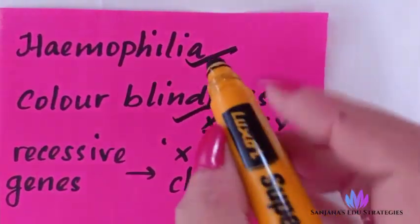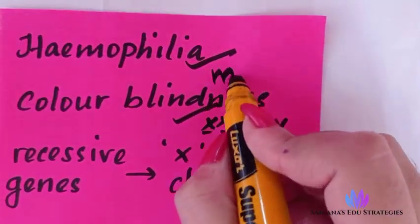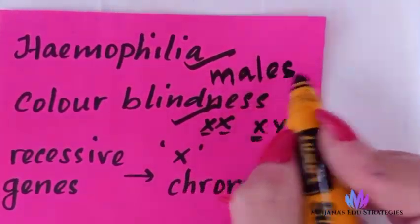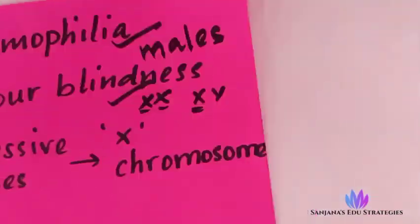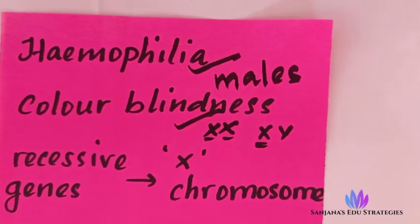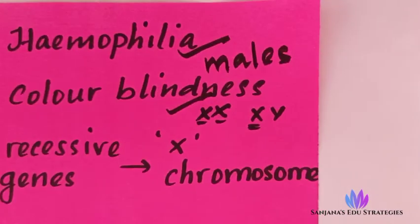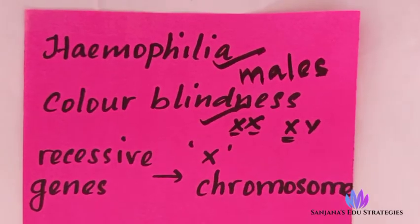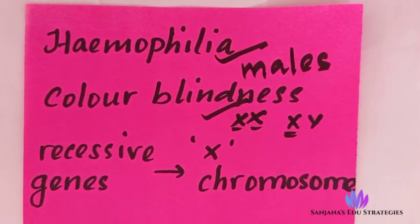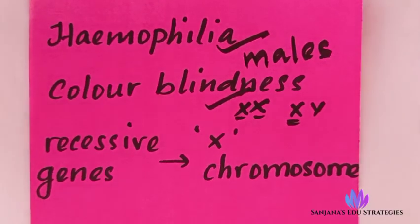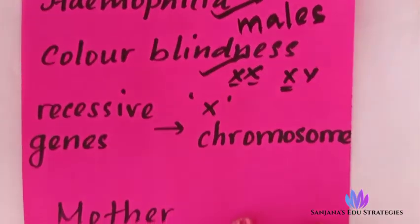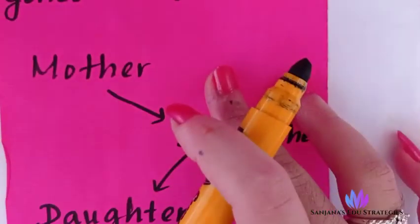Both hemophilia and color blindness occur mostly in males than in females. But that doesn't mean it doesn't occur in females — it occurs in females also, but it is mostly seen in males. Now we will see what is crisscross inheritance.